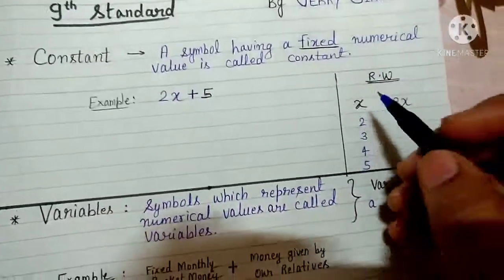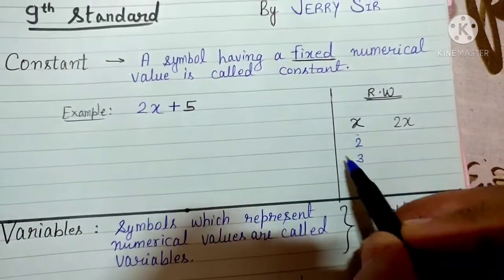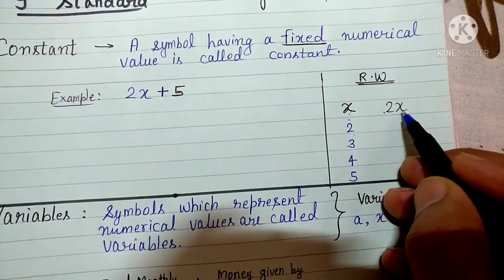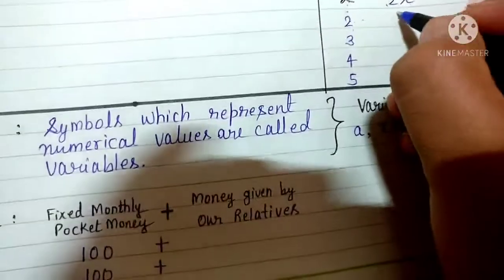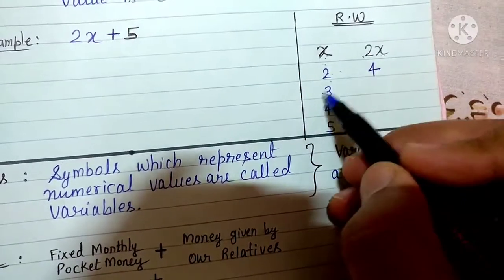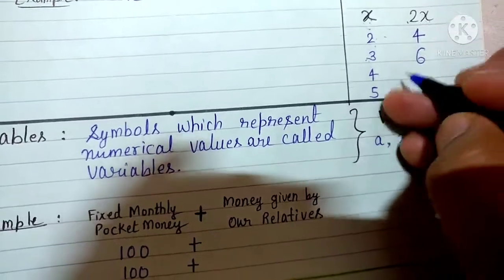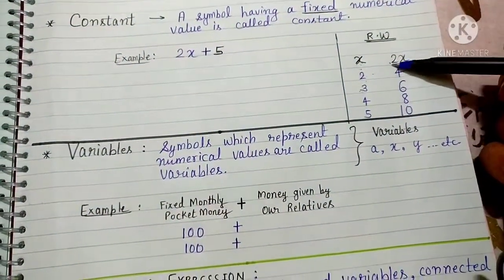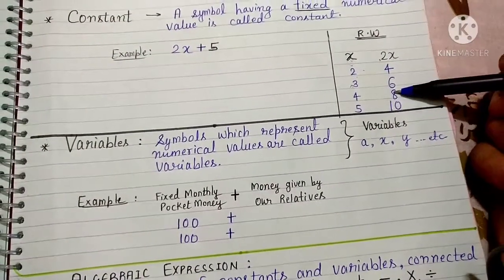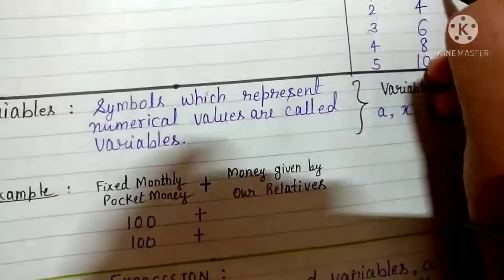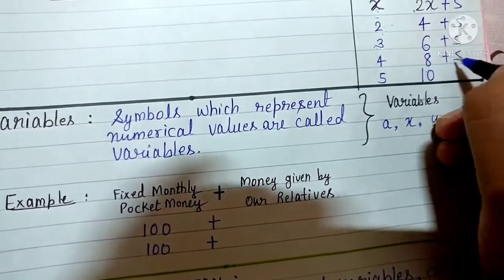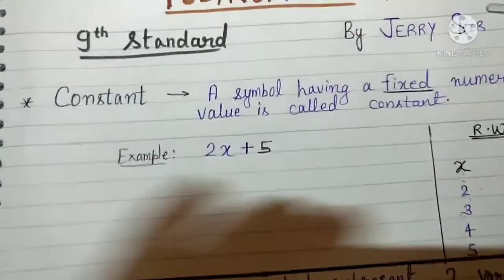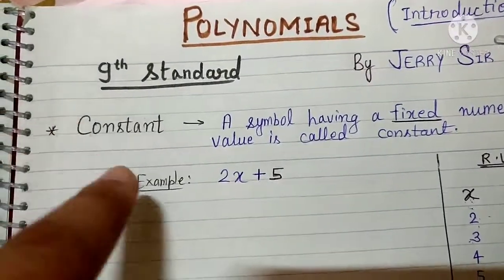2x can change because x is a variable. For example, if x equals 2, then 2x becomes 4. If x equals 3, then 2x becomes 6. If x equals 4, it becomes 8, and if x equals 5, it becomes 10. So the value of 2x keeps changing, but the value of 5 remains 5 only — it does not change. It remains fixed. This fixed value is called a constant.